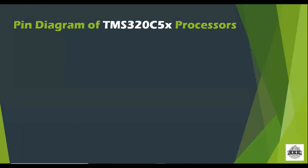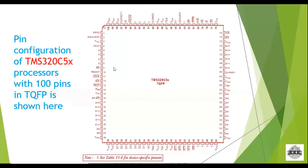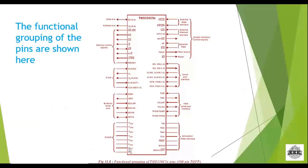The pin diagram of the TMS320C5x processor is available in two types of package formation: quad flat package and thin quad flat package. The pin configuration consists of 100 pins. The pin diagram is divided as 1 to 25, 26 to 50, 51 to 75, and 76 to 100, totaling 100 pins. The functional grouping includes addressing modes, input ports, and output ports all grouped together.